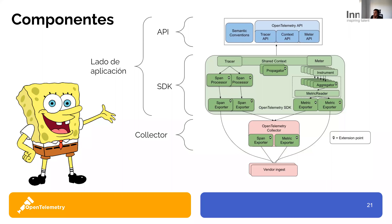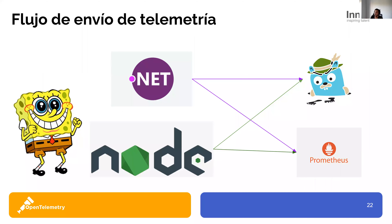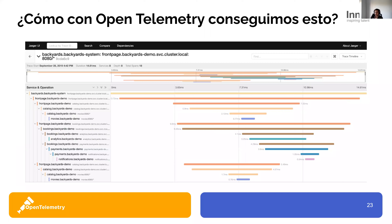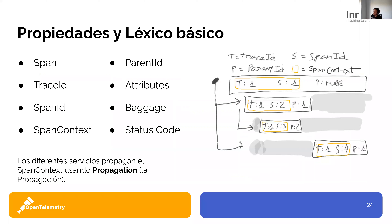Fuera de la aplicación, el componente que tenemos es el Collector. Decíamos que es agnóstico a la aplicación y podemos cambiar de proveedores sin necesidad de redesplegar. El Collector también tiene sus exportadores y diferentes piezas. A partir de ahí ya llega al vendor backend. ¿Cómo sería el flujo de telemetría con OpenTelemetry? Nuestra aplicación .NET exportaría, por ejemplo, a Jaeger y a Prometheus. Si quisiéramos cambiar de Jaeger, que es para trazas distribuidas open source, a otro proveedor, podríamos hacerlo.